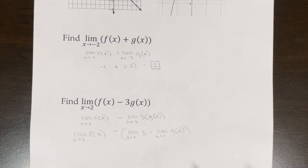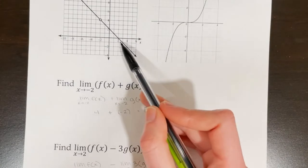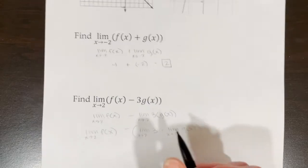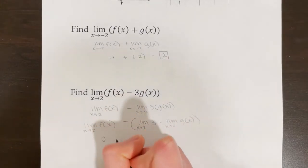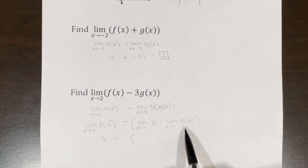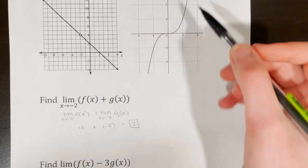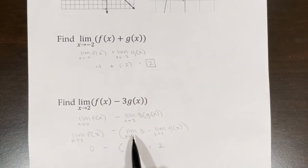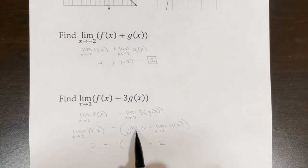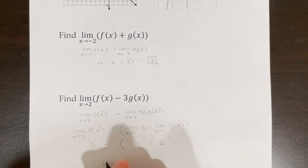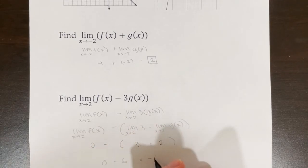Now I need to look at my graphs. The limit as x approaches 2 of f(x): on my graph, as x goes to 2, f(x) is going to 0. For the limit as x approaches 2 of g(x), that is 2. And the limit as x approaches 2 of 3 is just 3 — I don't need the graph for that. So I have 0 minus 3 times 2, which is 0 minus 6, which is negative 6.